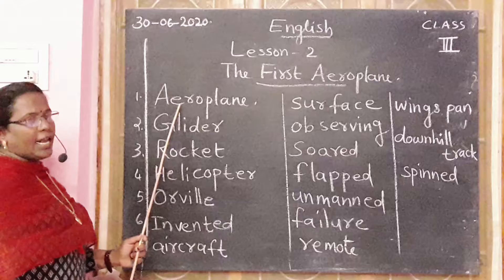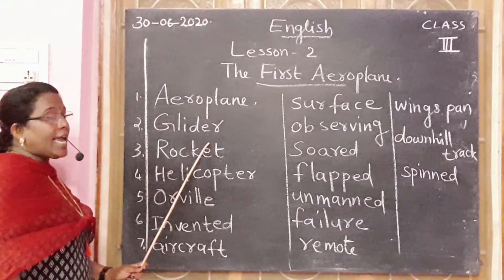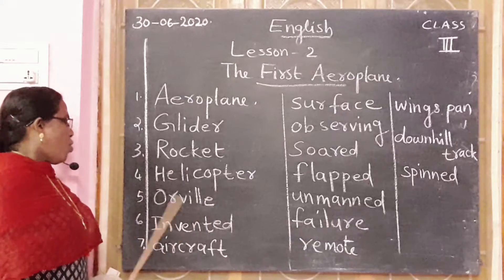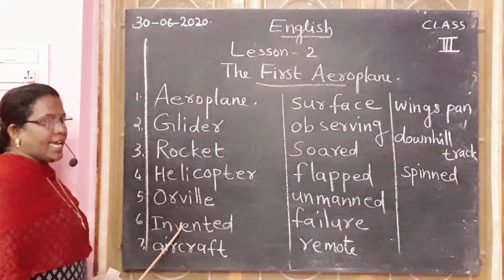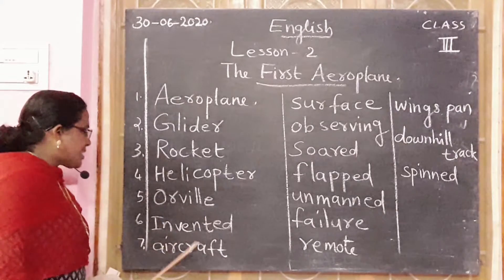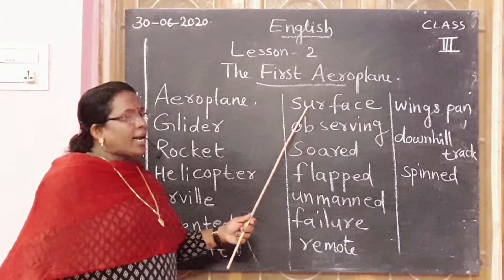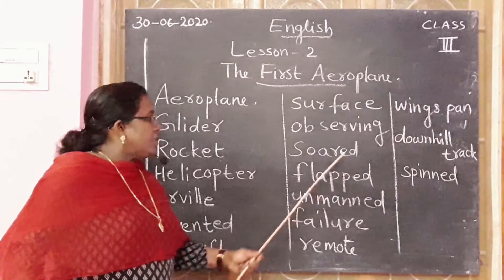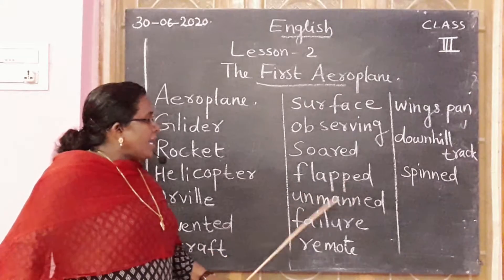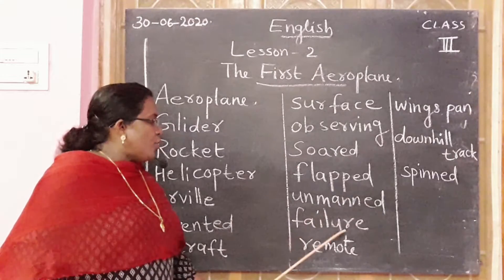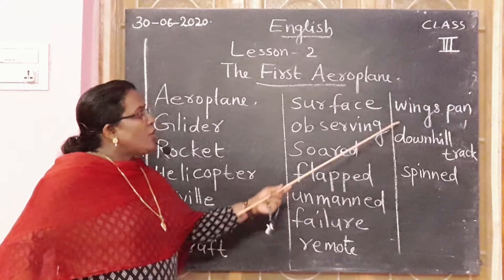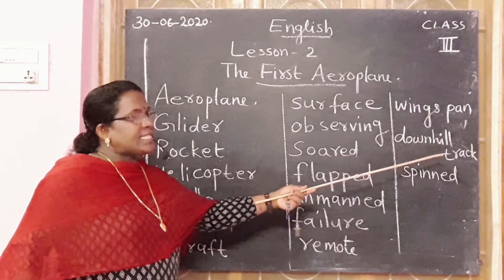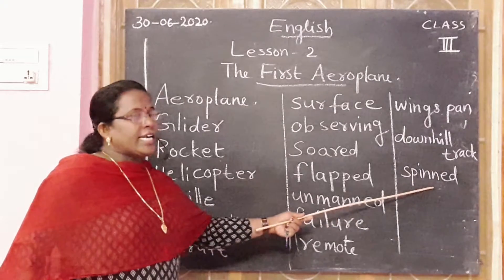Again — aeroplane: A-E-R-O-P-L-A-N-E. Glider: G-L-I-D-E-R. Rocket: R-O-C-K-E-T. Helicopter: H-E-L-I-C-O-P-T-E-R. Orville: O-R-V-I-L-L-E. Invented: I-N-V-E-N-T-E-D. Aircraft: A-I-R-C-R-A-F-T. Surface: S-U-R-F-A-C-E. Observing: O-B-S-E-R-V-I-N-G. Soared: S-O-A-R-E-D. Flapped: F-L-A-P-P-E-D. Unmanned: U-N-M-A-N-N-E-D. Failure: F-A-I-L-U-R-E. Remote: R-E-M-O-T-E. Wingspan: W-I-N-G-S-P-A-N. Downhill track: D-O-W-N-H-I-L-L T-R-A-C-K. Spinned: S-P-I-N-N-E-D.